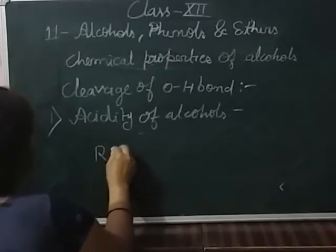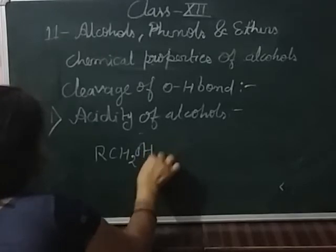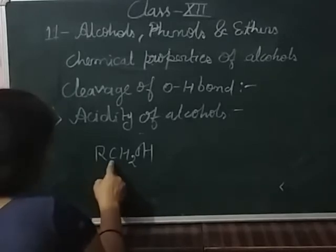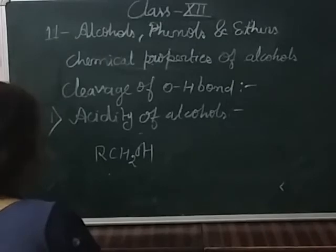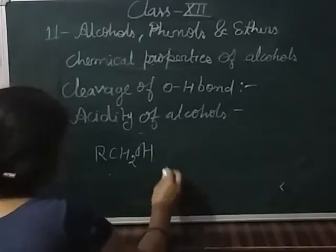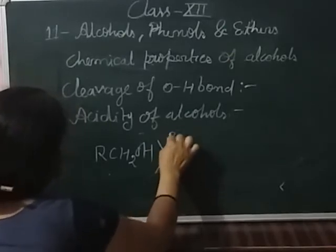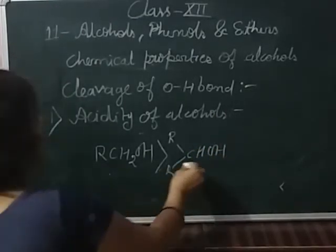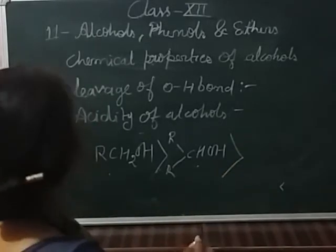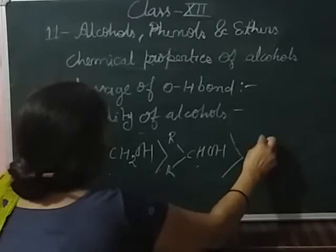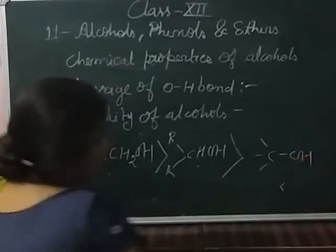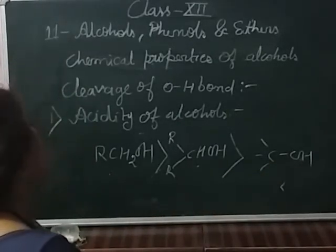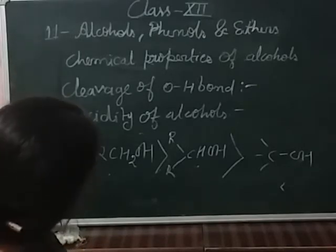This is explained by the following example. RCH₂OH is a primary alcohol — it has only one alkyl group attached to the carbon directly connected to the hydroxyl group, so it is more acidic than secondary alcohol. Secondary alcohol is more acidic than tertiary alcohol. Therefore, acidic strength decreases as the number of alkyl groups increases in the alcohol.